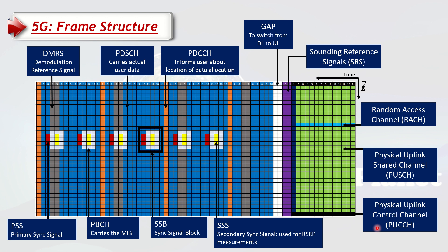The last and one of the most important channels is the PUCCH — Physical Uplink Control Channel. It carries control information — for instance, when data is sent in the downlink, the acknowledgements are sent over PUCCH. Similarly, if the UE needs to send data in the uplink, it needs to request resources by sending a scheduling request, which is also sent over PUCCH. So PUCCH is a very important channel.